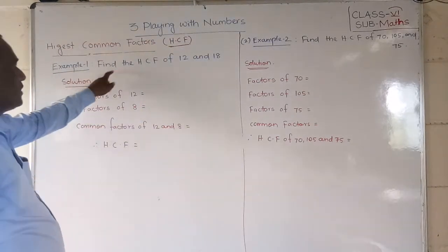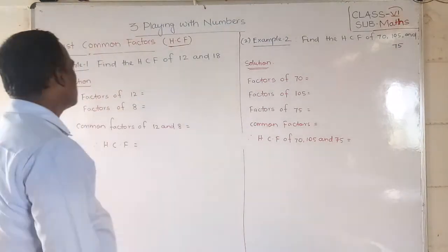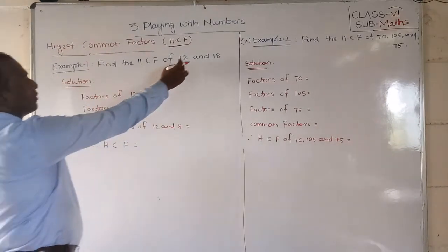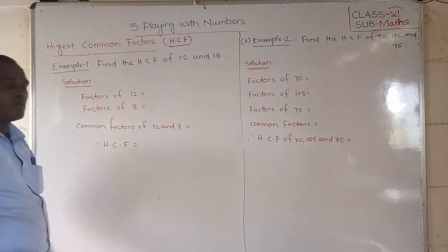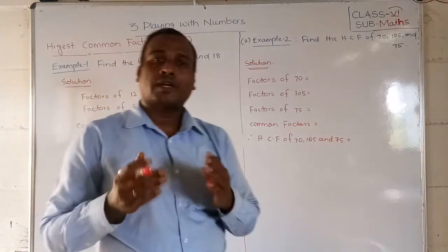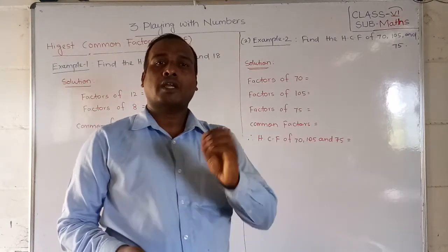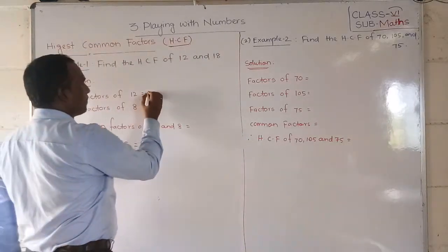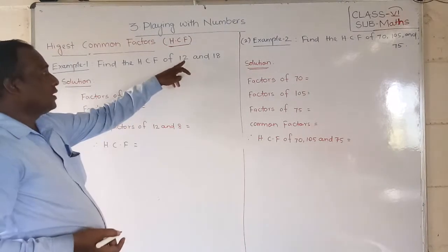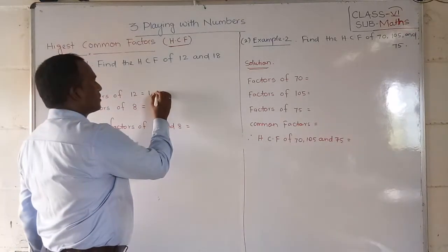First question: Find the HCF of 12 and 18. First of all, what are the factors of 12? We have to find that out. So first check that 1 is the factor of every number. 1 we can write compulsory. Next, check 2. Is 2 divided by 12 or not? 2 times 6 is 12, so 2 is also one factor.